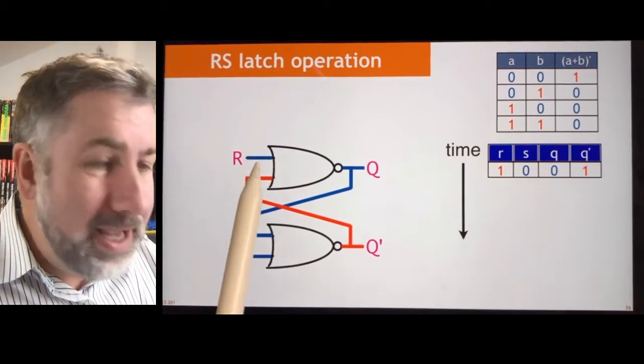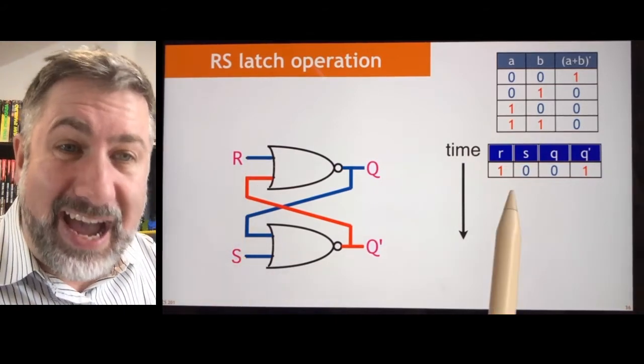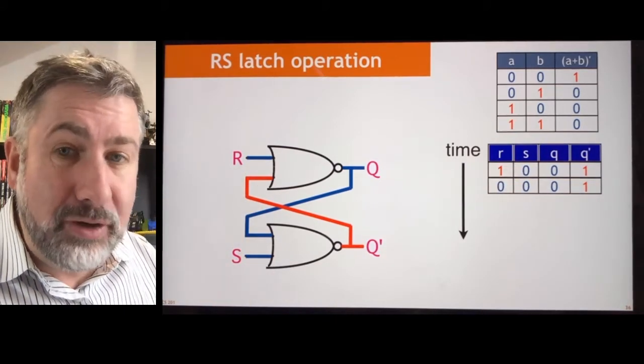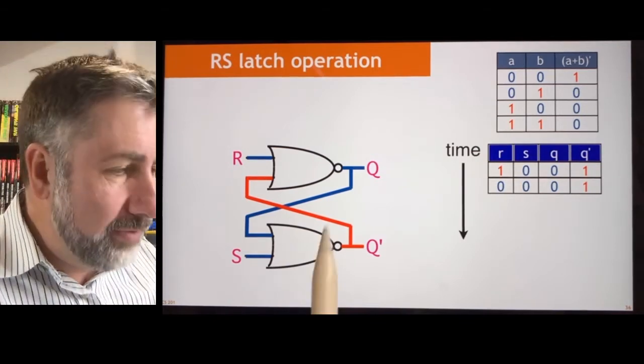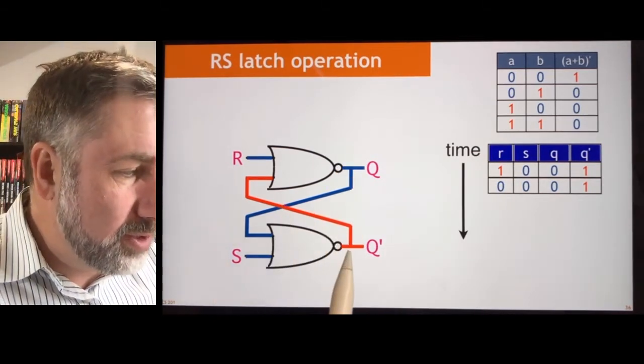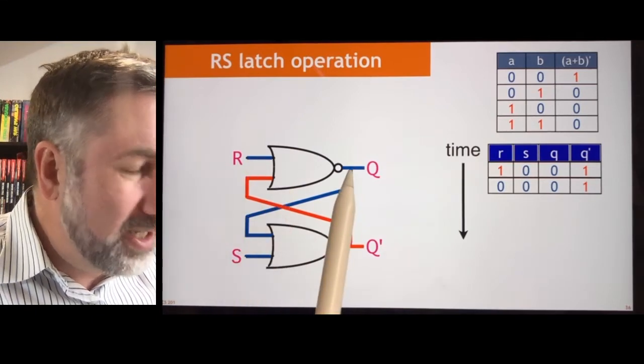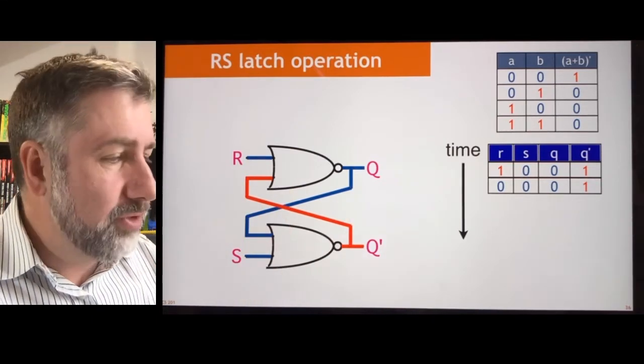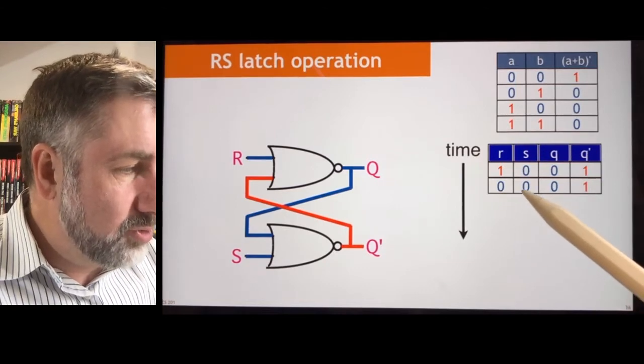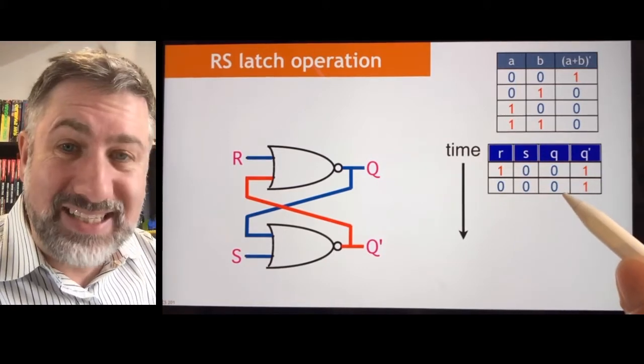Then, what happens if I make them both 0 at the same time after that? If they're both 0, nothing changes, right? Whatever value is here is used to reinforce this value. The 0 means these are both 0. That makes a 1. 0, 1 makes that a 0. Nothing changes. So if 0, 0, 0, that means that Q stays as 0.